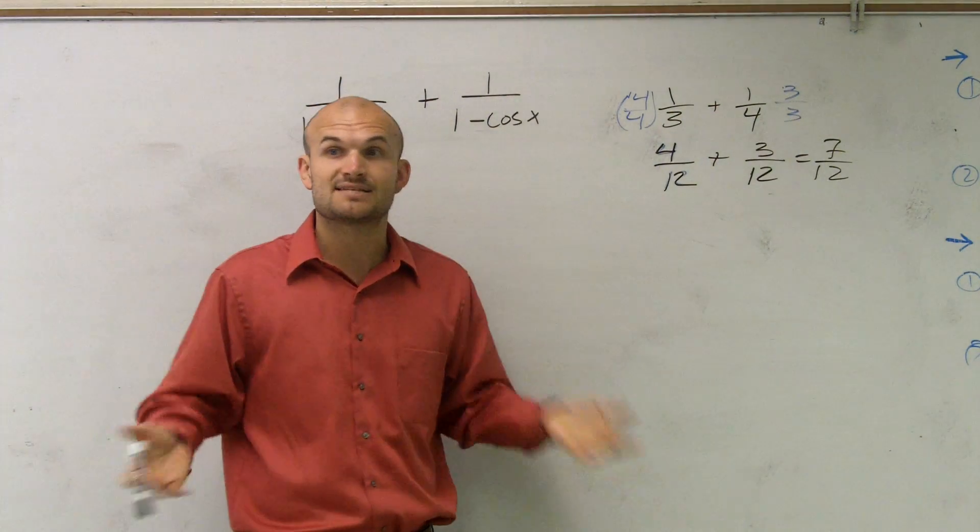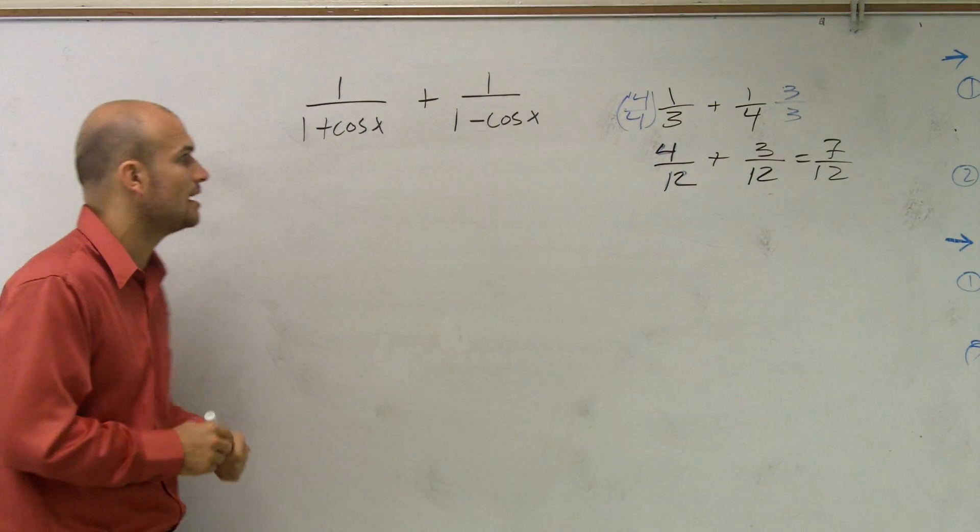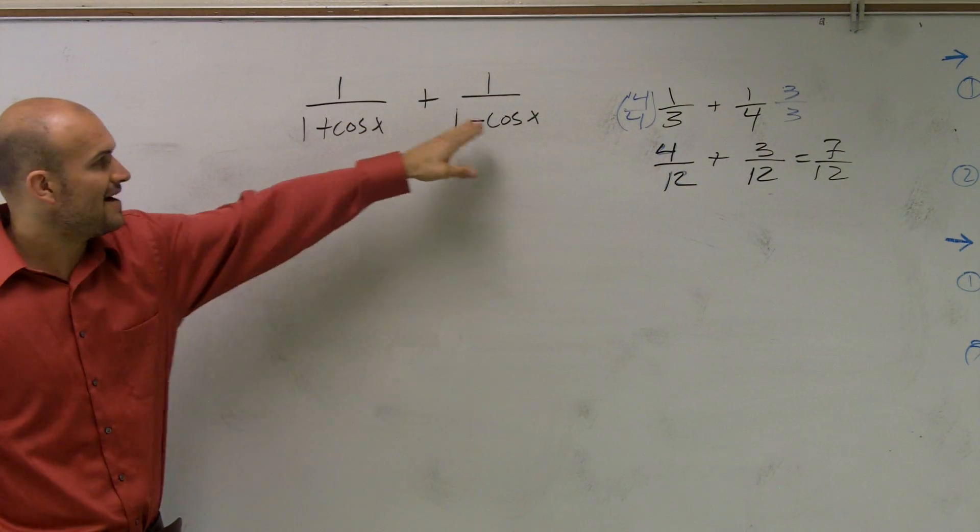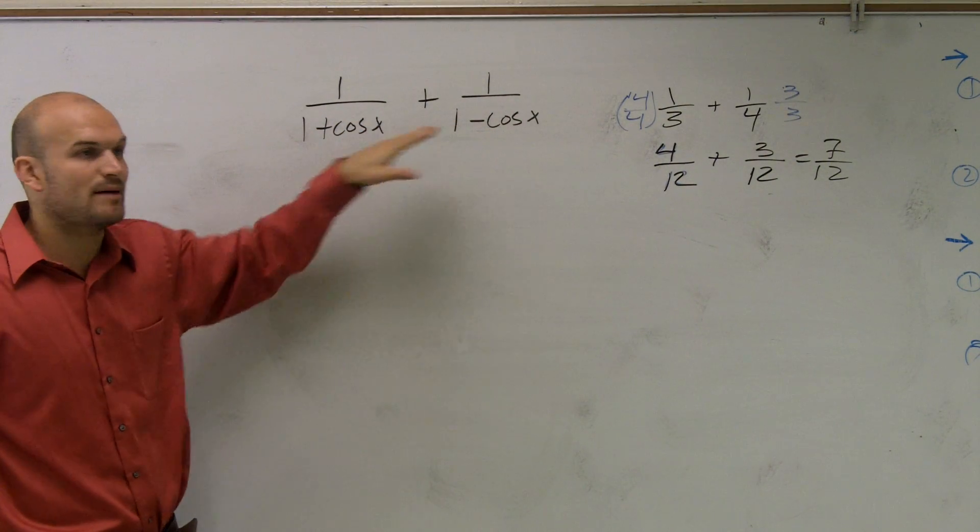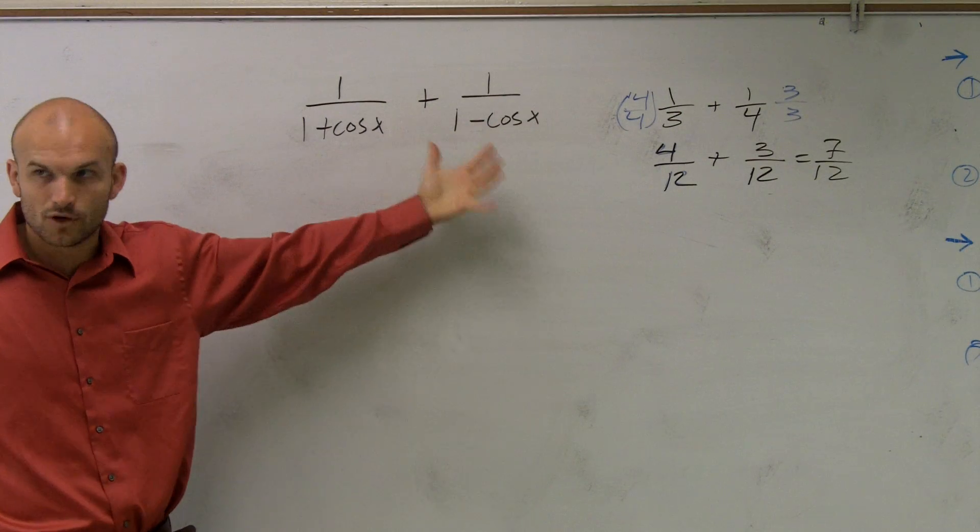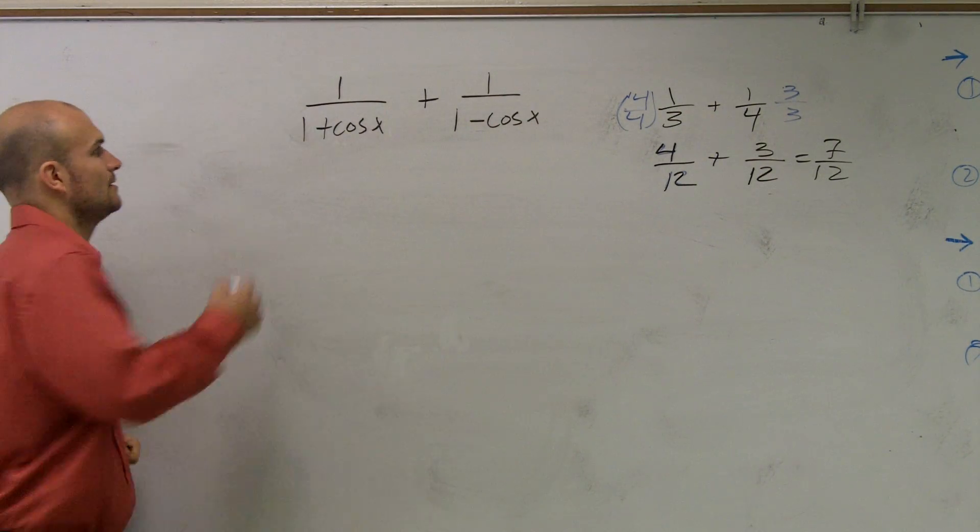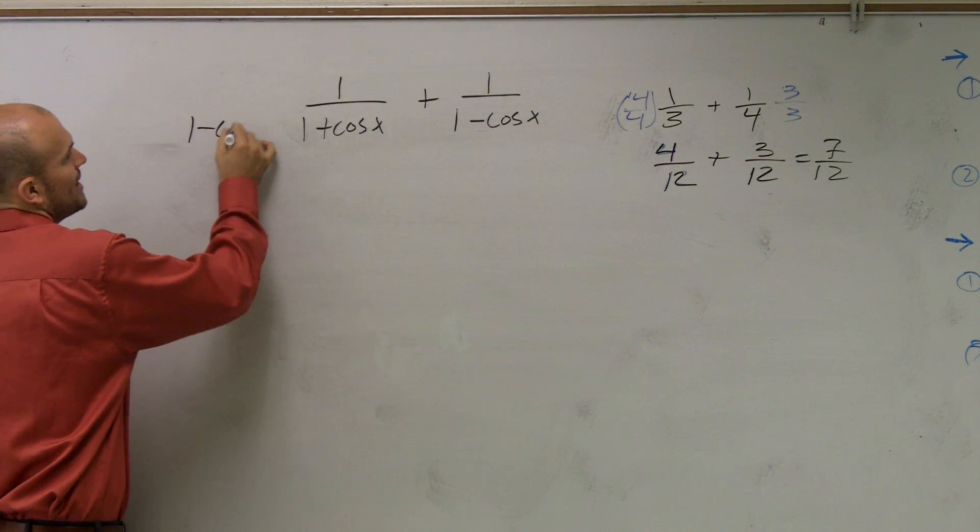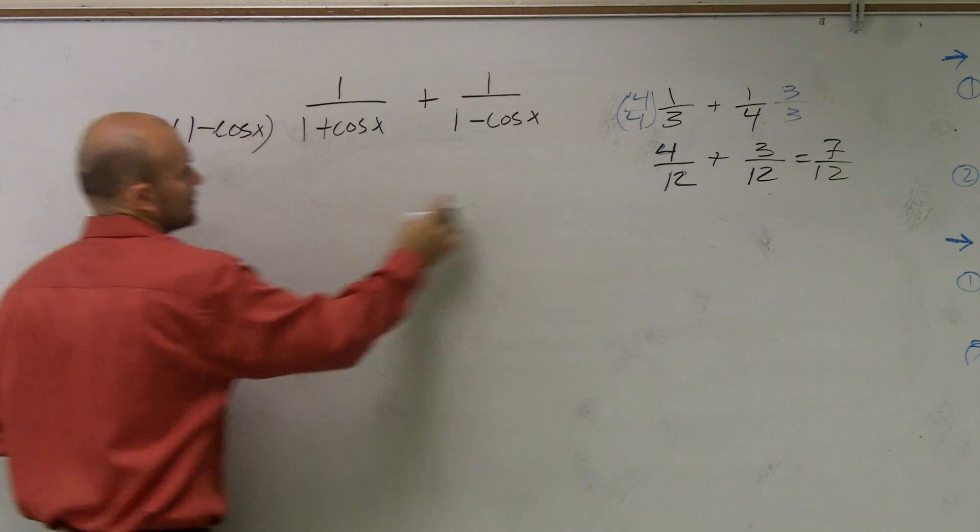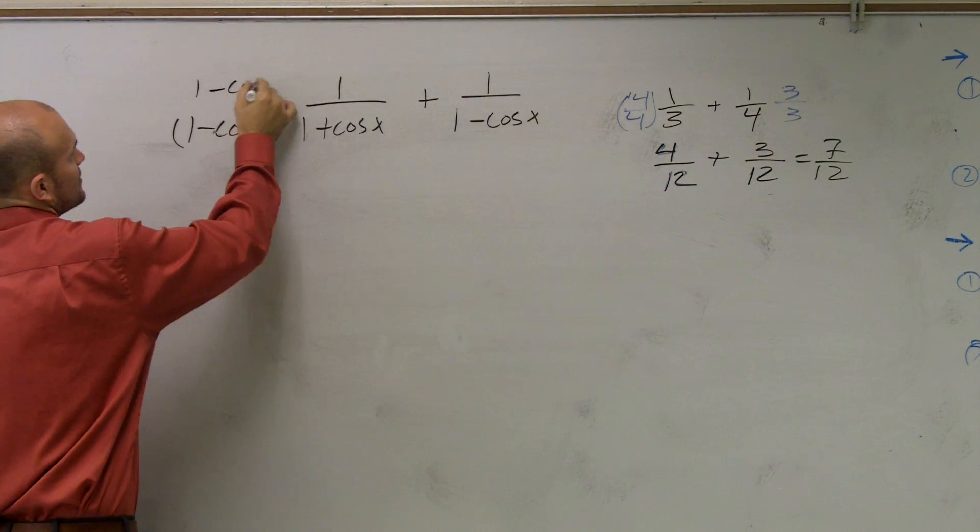So here, defining the common multiple, if I just multiply my two denominators by each other, I will produce a common denominator. So what I'm going to do is I'm just going to do 1 minus cosine of x over 1 minus cosine of x.